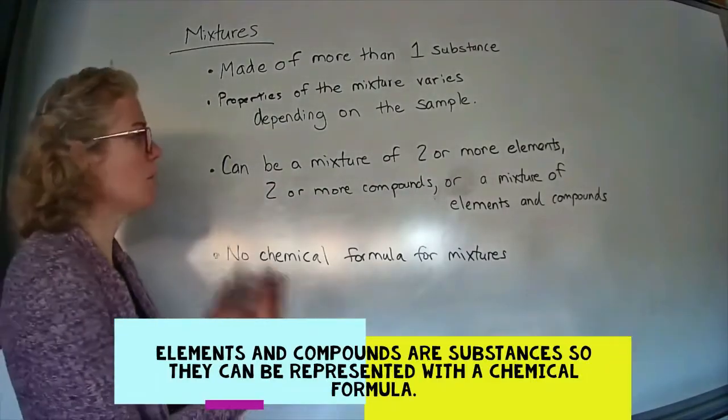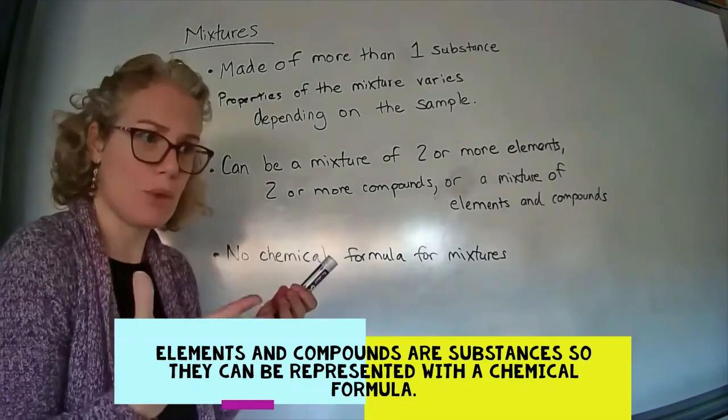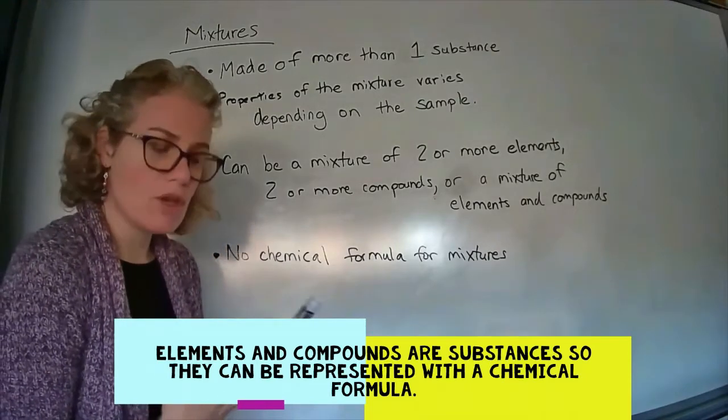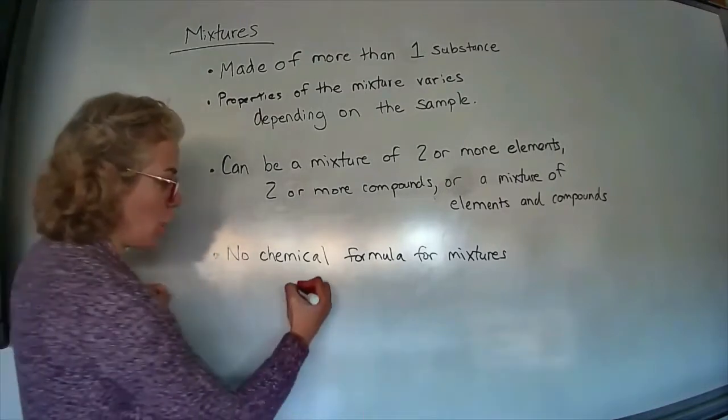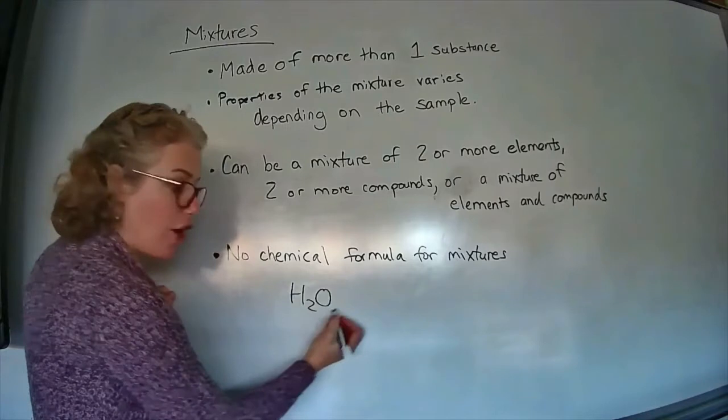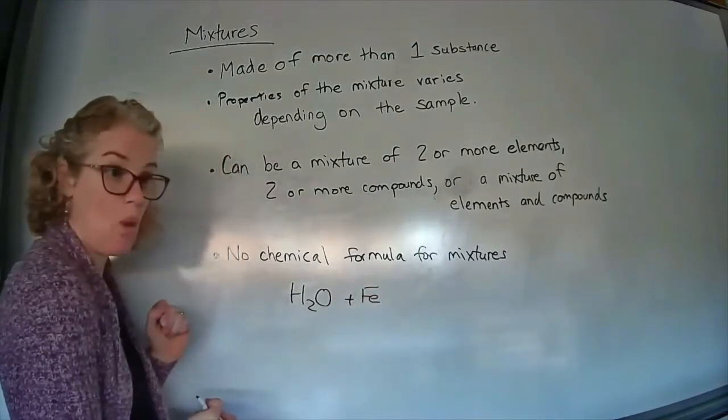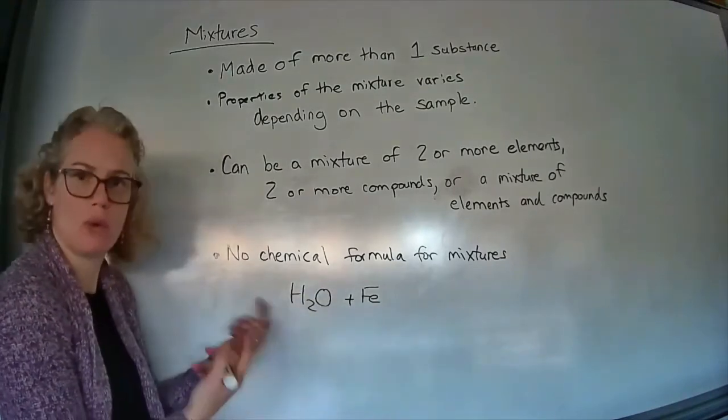There's no chemical formula written for mixtures because you would only write a chemical formula to show that it's a pure substance, that it's going to have the same properties throughout. So you can only do that for an element or compound. The only thing I could maybe do for a mixture is write it as a plus symbol. So here I've got water and I'm gonna put some iron into that water, and that's really the only way I could show a mixture with chemical symbols.